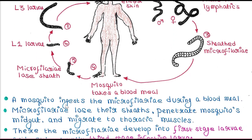A mosquito again ingests the microfilariae during a blood meal. One more mosquito bites this person and ingests the blood meal, which includes the microfilariae. The microfilariae lose their sheaths and penetrate the mosquito's midgut, then migrate to the thoracic muscle of the mosquito.